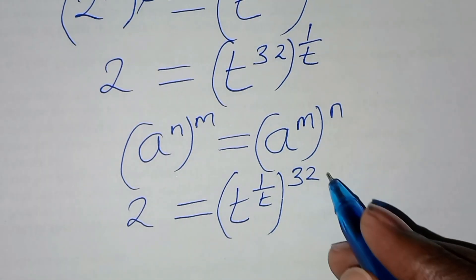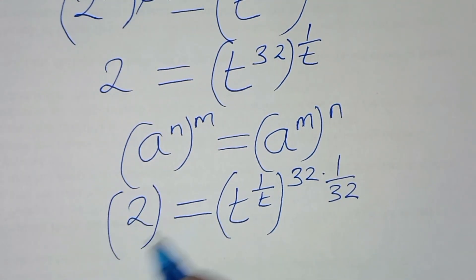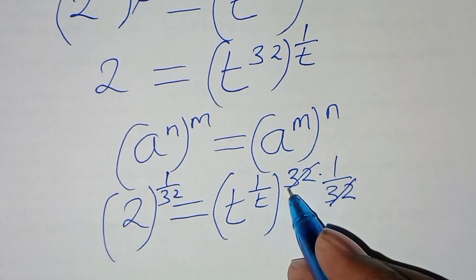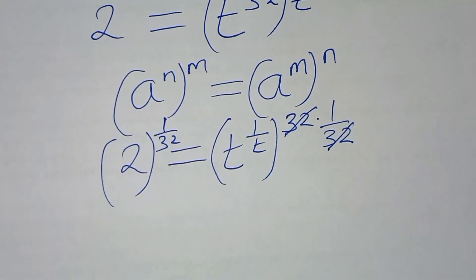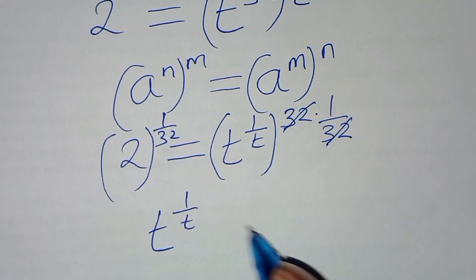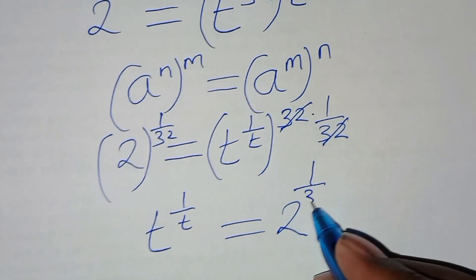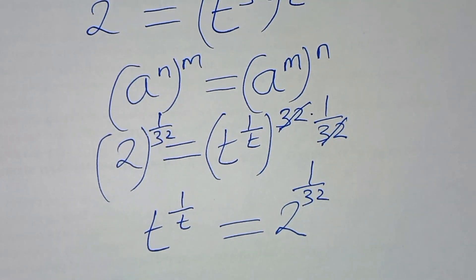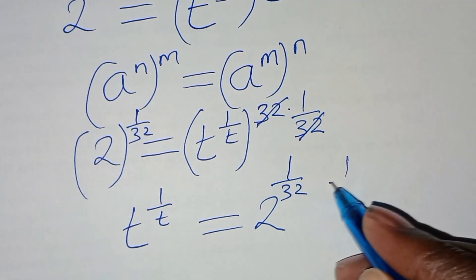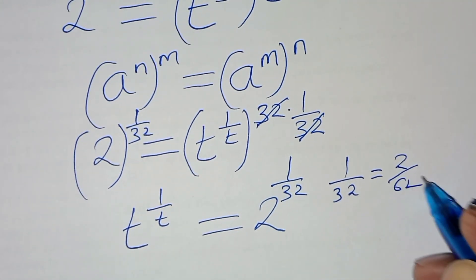Let's multiply both sides by 1 over 32. So the 32 simplifies, and this gives us t to the power 1 over t is equal to 2 to the power 1 over 32. Now, the first thing here, we can express 1 over 32 as 2 over 64.